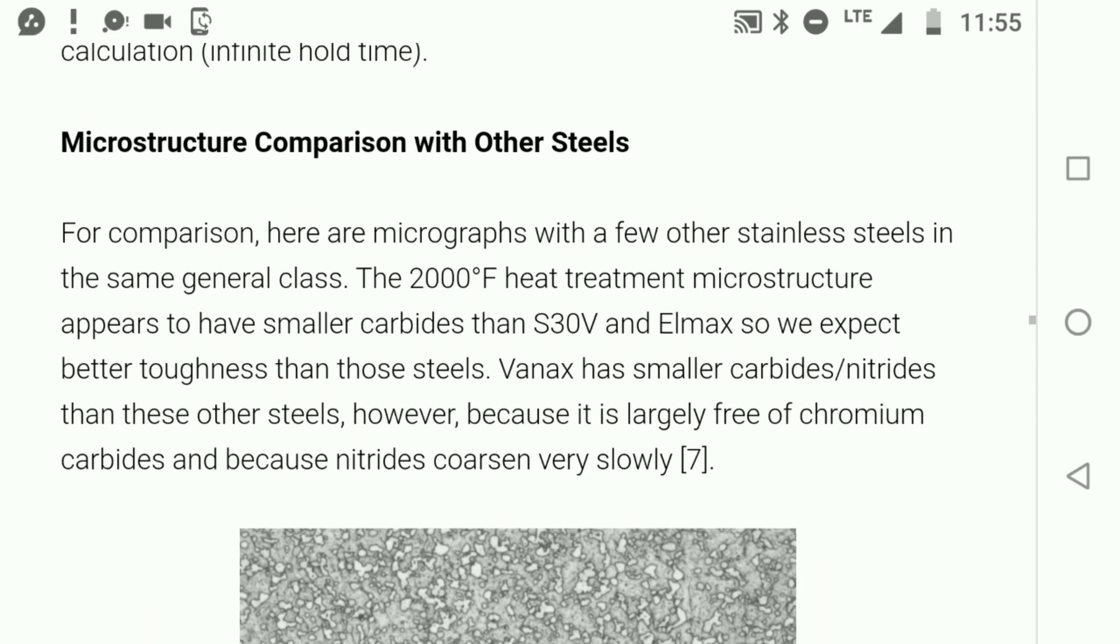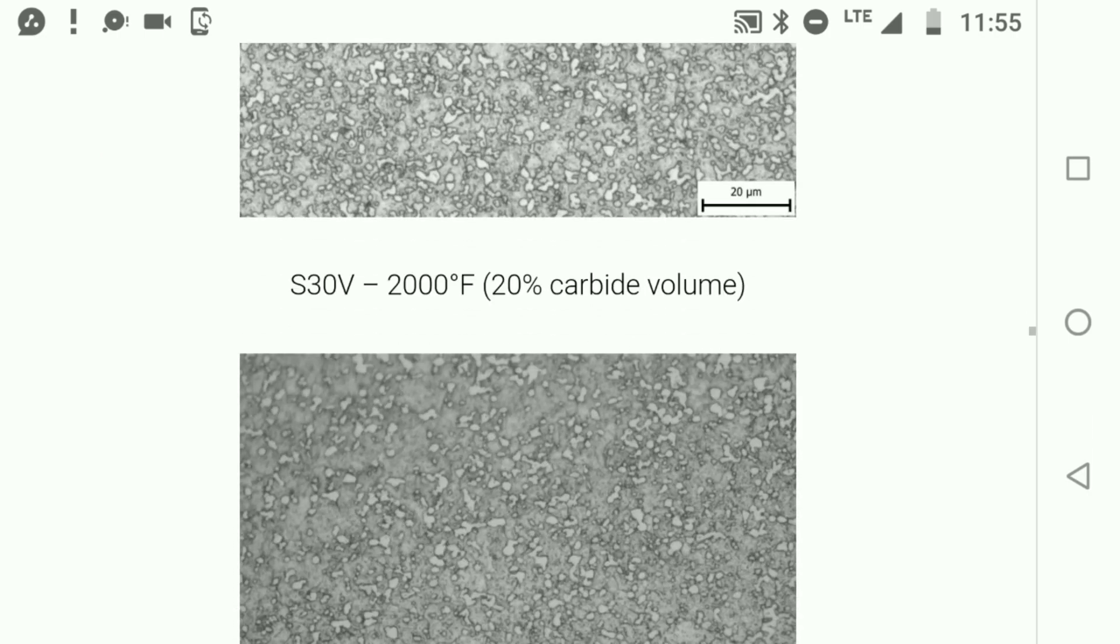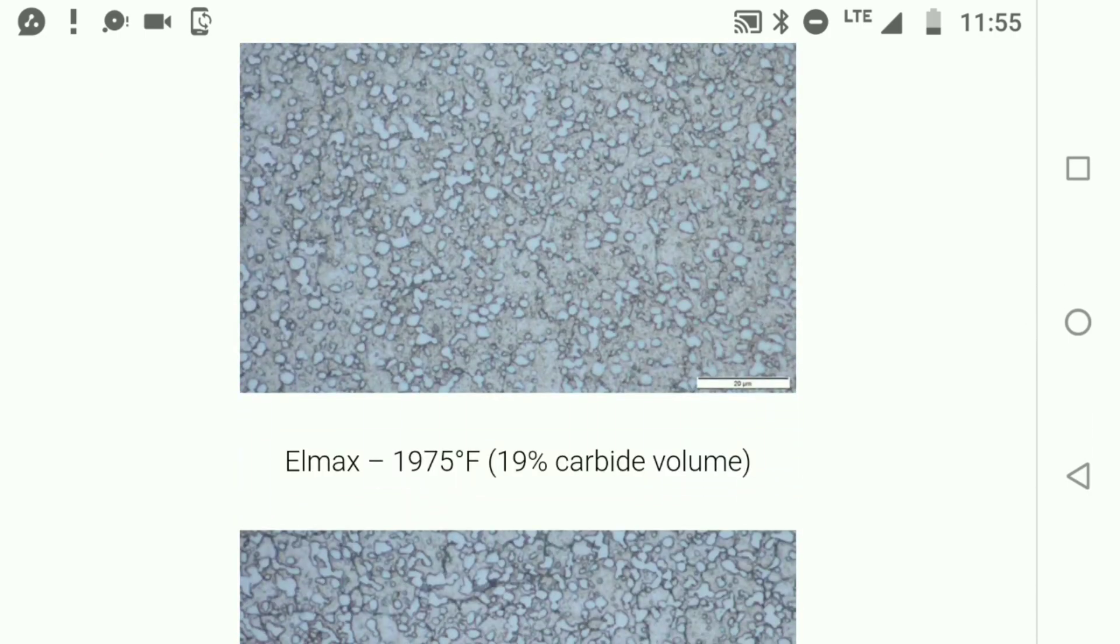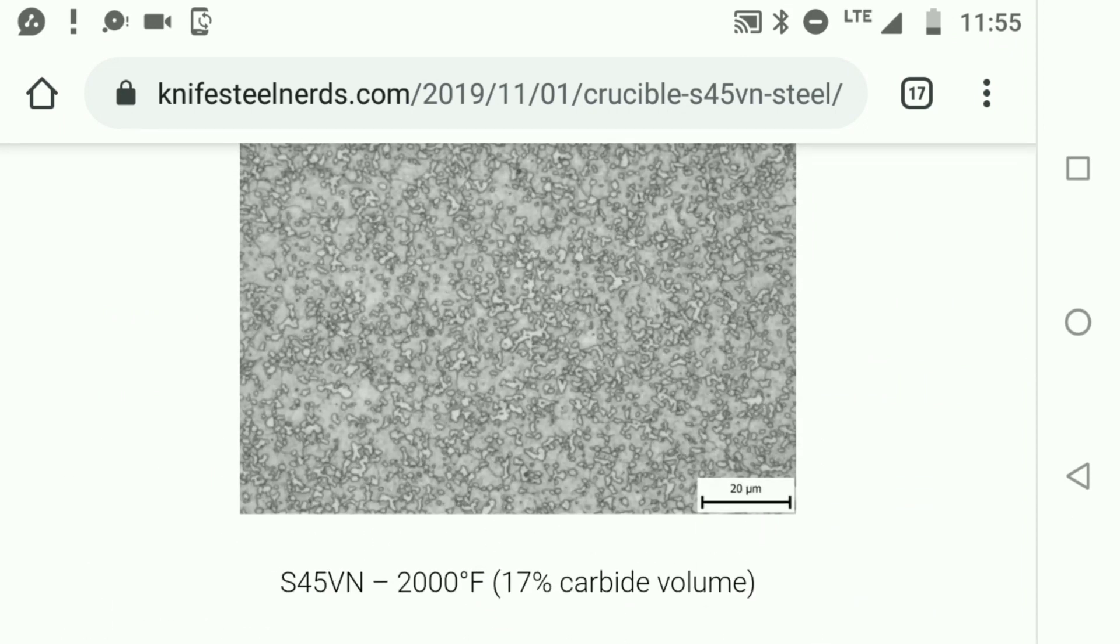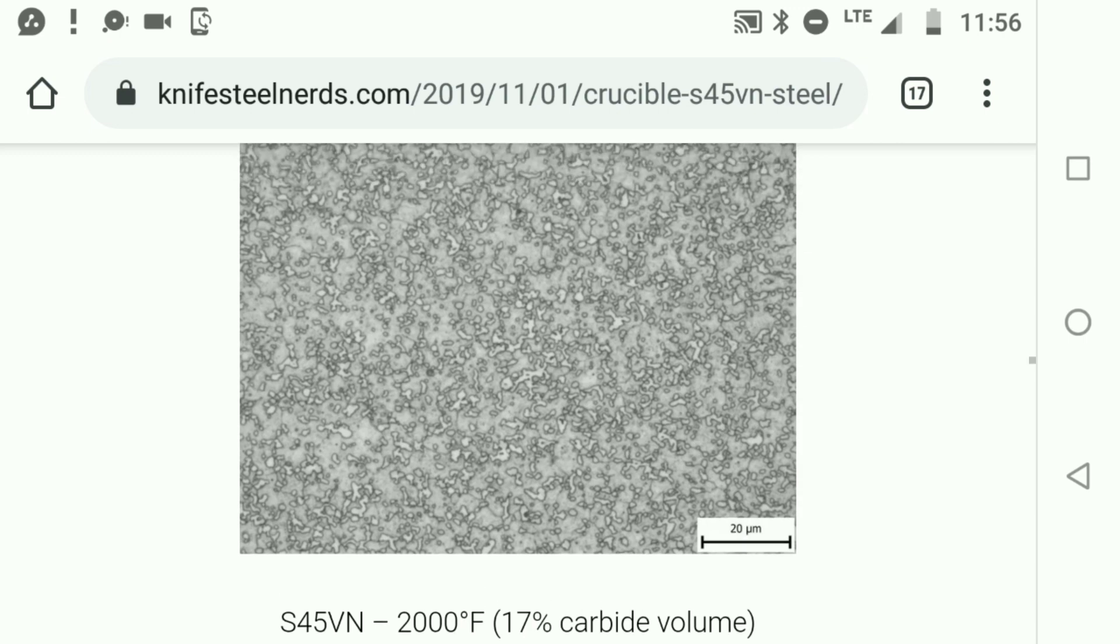And yes, that's less carbide than you have in something like S30V, a little less than Lmax, but it has a higher ratio of the harder carbides, the more effective carbides, the MC type rather than the M7C3 type. That's what makes this steel so exciting. We get the harder carbides we want, reduced carbide volume makes something more durable and tougher, and we have a finer microstructure to it as well.